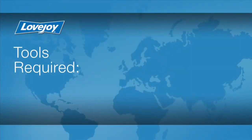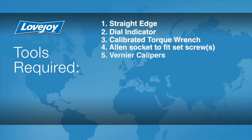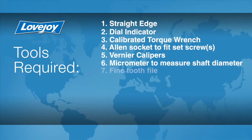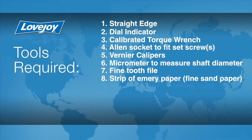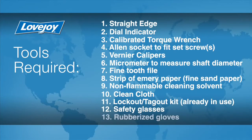Let's look at the necessary tools we will need to perform this installation: a straight edge, a dial indicator, a calibrated torque wrench, Allen socket to fit the set screws, vernier calipers, a micrometer to measure the shaft diameter, a fine tooth file, a strip of emery paper, non-flammable cleaning solvent, a clean cloth, lockout tagout kit, safety glasses, and rubberized gloves.